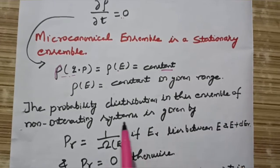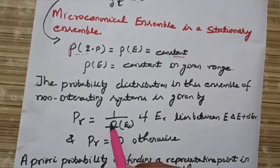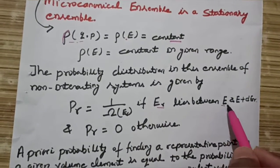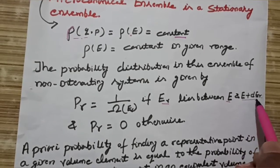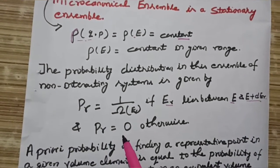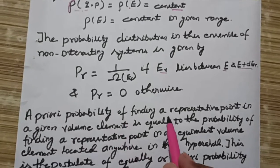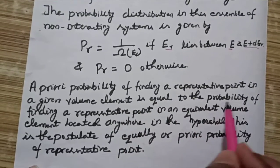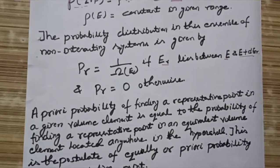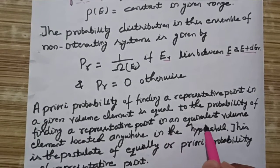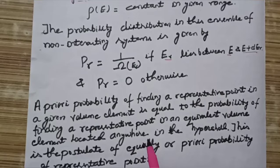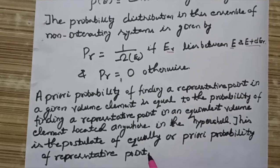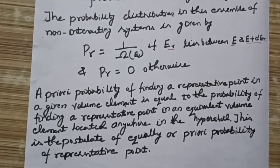The probability distribution function in this ensemble of non-interacting systems is given by P(r) = 1/Ω, where E lies in the energy range E to E + δE, and otherwise P(r) is zero. From this, the a priori probability of finding a representative point in a given volume element equals the probability of finding a representative point in an equivalent volume located anywhere in the hypercell. This is the postulate of equal a priori probability of representative points.